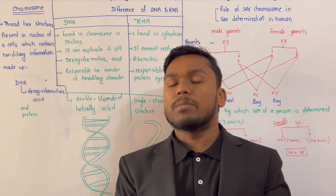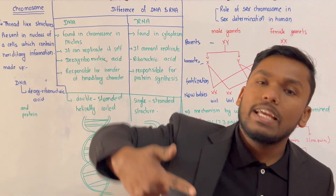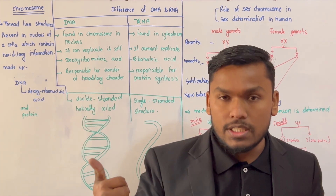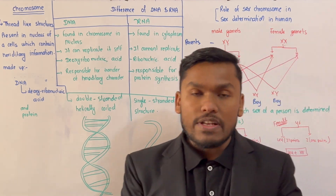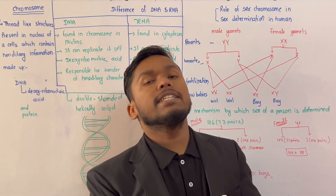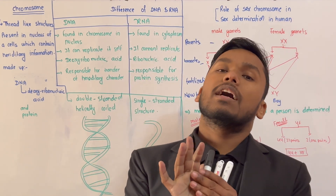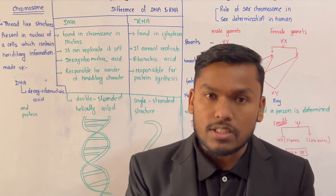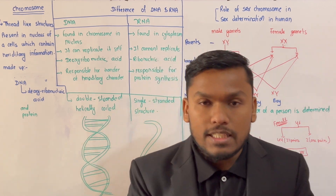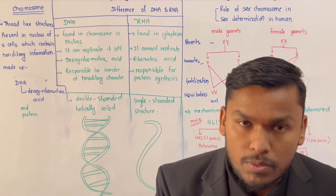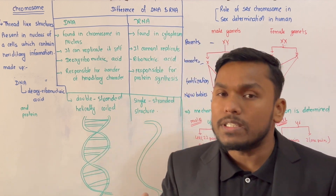The chromosome is made of DNA and protein. Now, let us differentiate between DNA and RNA. DNA full form: Deoxyribo nucleic acid.